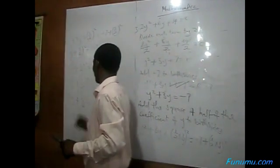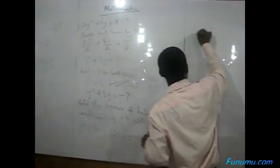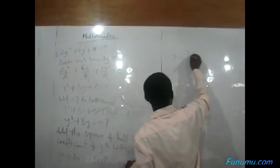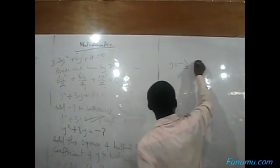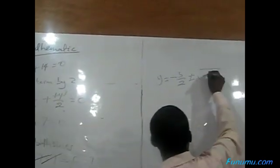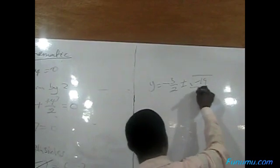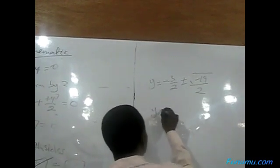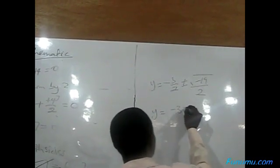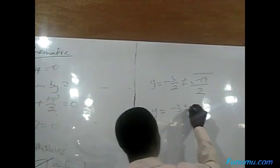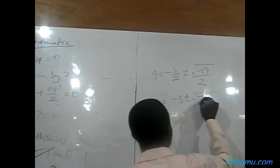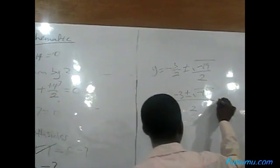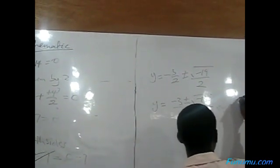Bring this one to the other side. That is, Y equals minus 3 all over 2 plus or minus square root of minus 19 all over 2. This simplifies to Y equals minus 3 plus or minus square root of minus 19, all over 2.